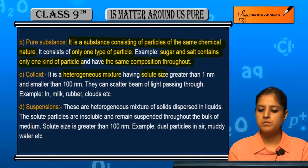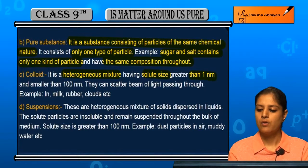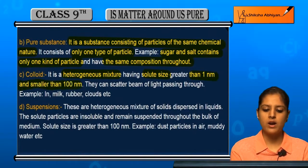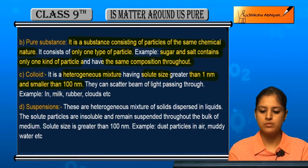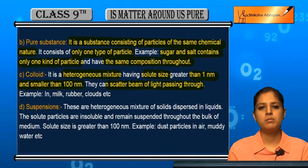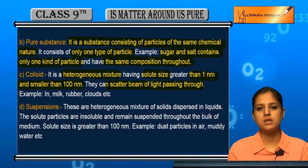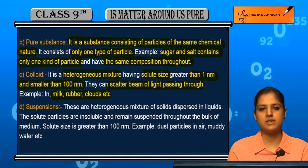Next is a colloid. Colloid ek heterogeneous mixture hota hai jisme jo particle size hai woh one nanometer se bada aur hundred nanometer se chhota hota hai — matlab one se hundred ke beech me hota hai. And they can scatter a beam of light passing through — woh Tyndall effect show karte hain, agar uske andar se beam of light pass karayen to usko scatter kar sakti hai. For example: ink, milk, rubber, clouds, etc.